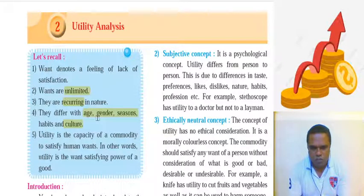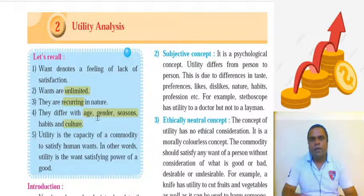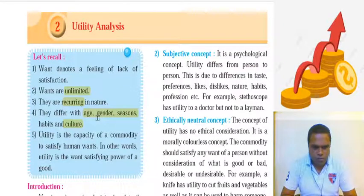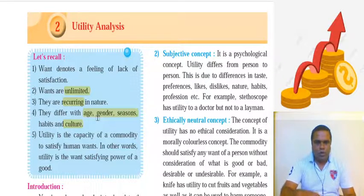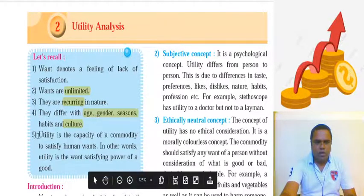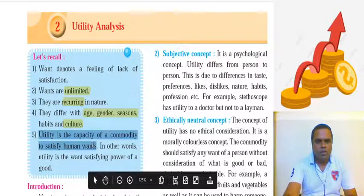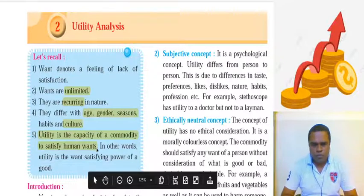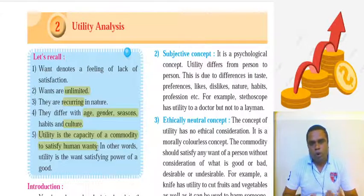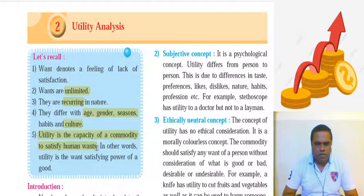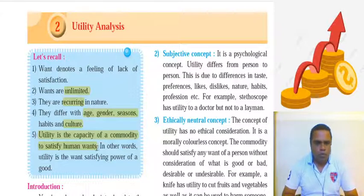So finally we come to the concept called utility. If we have a need, then there are certain things which have the ability and capacity to fulfill our needs. So the capacity within a commodity to fulfill our need — that capacity is called utility. How do you define utility? Utility is the capacity of a commodity to satisfy a human want. The want-satisfying power of a commodity is known as utility.